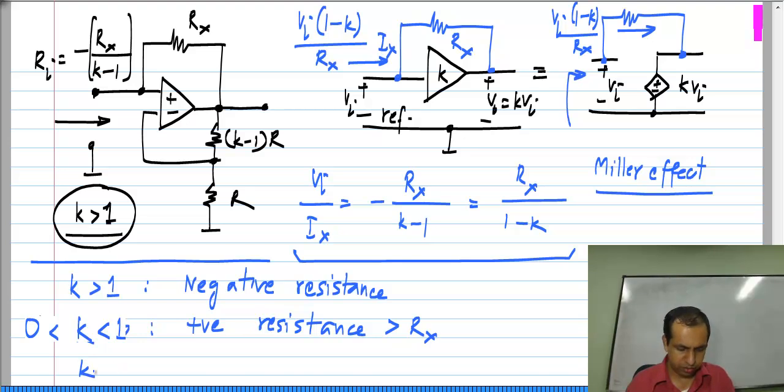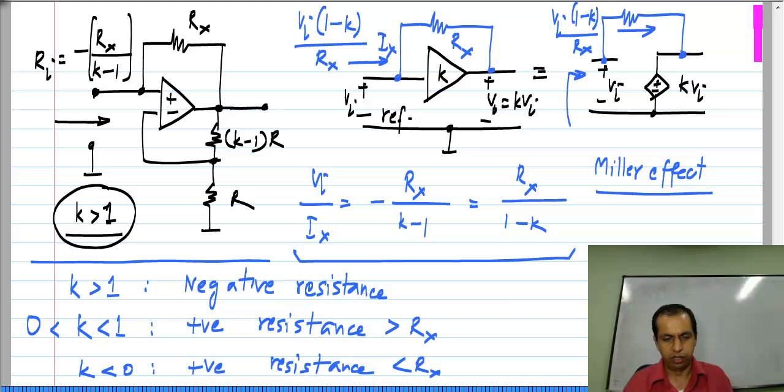And if K is smaller than 0, that is if K is negative, then we have a positive resistance that is smaller than R x. You can make a large resistance look like a small resistance by connecting it across an amplifier whose gain is negative.